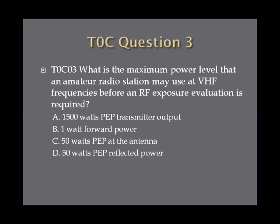Question three. What is the maximum power level that an amateur radio station may use at VHF frequencies before an RF exposure evaluation is required? A, 1500 watts PEP transmitted output. B, 1 watt forward power. C, 50 watts PEP at the antenna. Or D, 50 watts PEP reflected power?